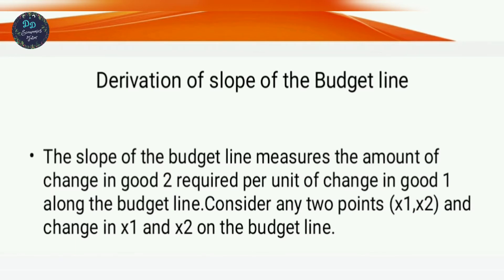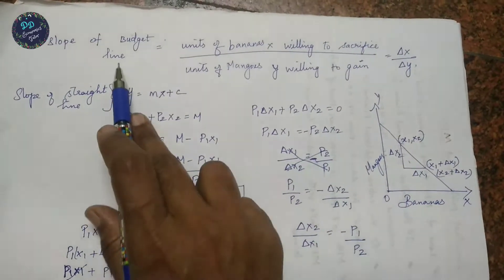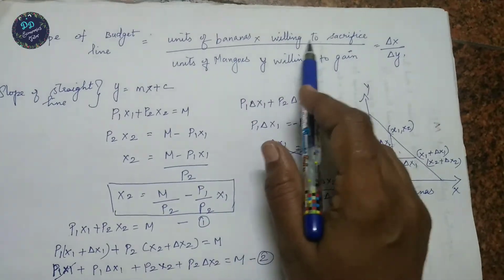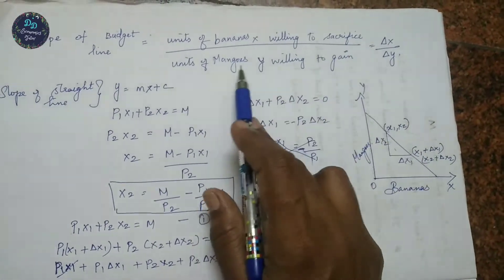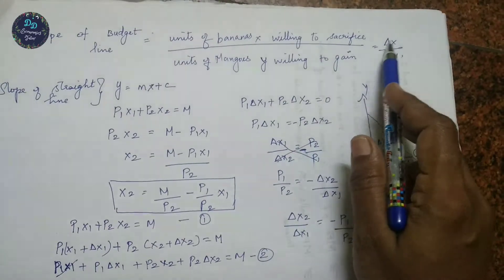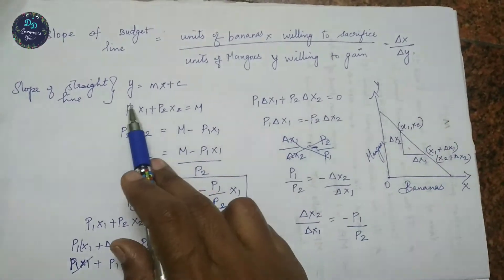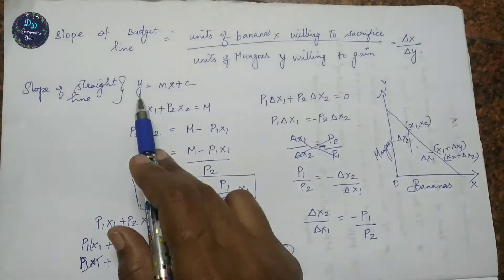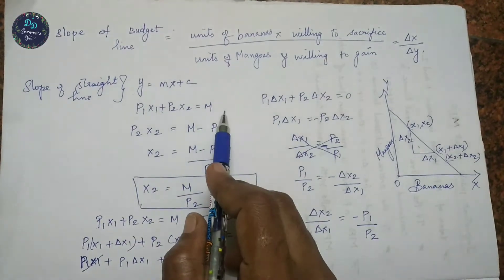Consider any two points (x1, x2), where x1 and x2 are the amounts of good one and good two. The changes are represented as (x1 + Δx1, x2 + Δx2) on the budget line. The slope of the budget line equals −p1/p2. Using the slope of a straight line formula y = mx + c, we derive it from the budget line equation p1·x1 + p2·x2 = M.